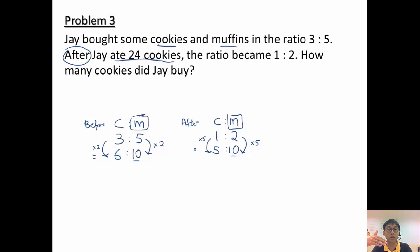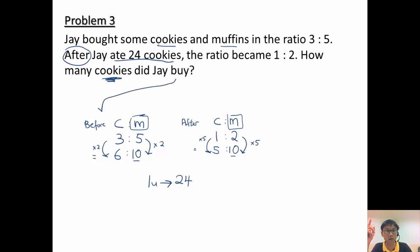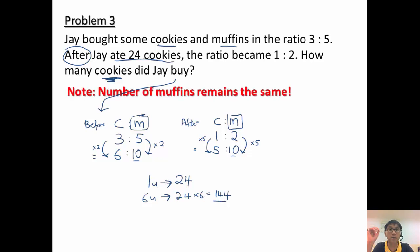Now I compare cookies, because cookies is the one that changed. Cookies initially is 6 units; now it is 5 units. I lost 1 unit, and that 1 unit represents the 24 cookies he ate. I'm looking for the number of cookies he bought, which is the before part — 6 units. I use the equivalent ratio value of 6, not the original 3, because I've already scaled it. So 6 units equals 24 times 6, which gives 144. The key here is the number of muffins remains the same.